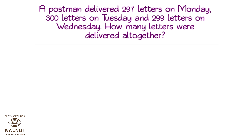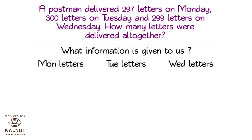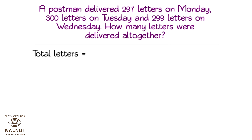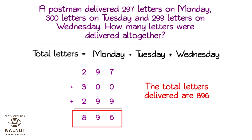A postman delivered 297 letters on Monday, 300 letters on Tuesday, and 299 letters on Wednesday. How many letters were delivered altogether? What information is given to us? Monday letters, Tuesday letters, and Wednesday letters. What do we have to find out? The total letters delivered. This is a problem of addition. Total letters is equal to Monday plus Tuesday plus Wednesday. So the total letters delivered are 896.